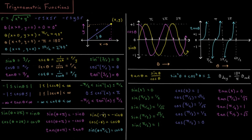Sine is anti-symmetric with respect to the origin — it's an odd function, inverted through the origin — so sine of negative theta equals negative sine of theta. Cosine is symmetric about the y-axis, so cosine of negative theta equals cosine of theta. If we add or subtract 90 degrees, we can interconvert sine and cosine. If we look at sine and go forward 90 degrees, cosine always has the same value — they have a phase shift of 90 degrees relative to one another.